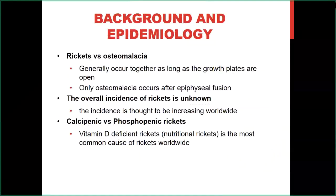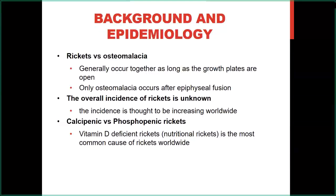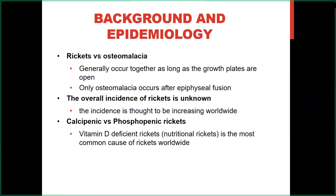Rickets is the deficient mineralization of the growth plate, as compared to osteomalacia, which is deficient mineralization of the bony matrix as a whole. Rickets and osteomalacia tend to occur together as long as growth plates are open. Once epiphyseal fusion occurs, rickets cannot occur — only osteomalacia presents in adulthood. The overall incidence of rickets is unknown, but it is thought to be increasing worldwide, including in developed nations. Rickets can be either calcipenic or phosphopenic, with vitamin D deficient nutritional rickets being the most common cause worldwide.